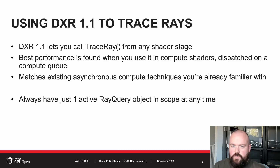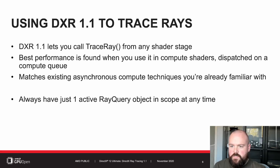While DXR 1.1 allows you to call TraceRay from any shader type in any shader stage, the best performance on RDNA 2 is found when you use it from compute shaders dispatched on the compute queue. That allows more optimal scheduling of work in parallel with other work in the graphics queue. It also makes sense to always run your ray queries from a compute shader with just a single ray query object in scope at any point in your shader program — and that's worth repeating because it has a big effect on performance.